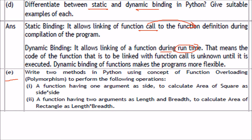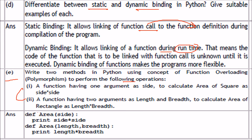Write two methods in Python using the concept of function overloading (polymorphism) to perform certain operations. The first function 'area(side)' calculates the area of a square: print side * side. The second function 'area(length, breadth)' uses two arguments and calculates the area of a rectangle: print length * breadth. Both functions have the same name but different arguments, demonstrating polymorphism.